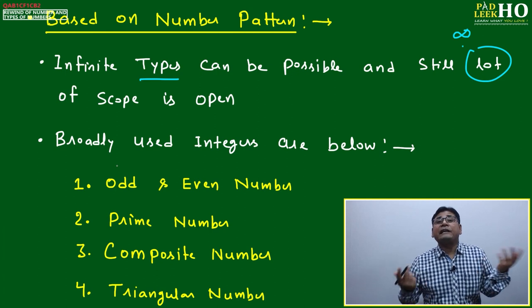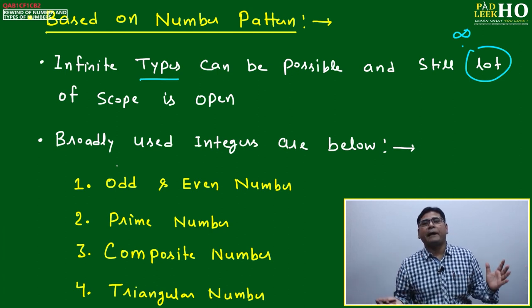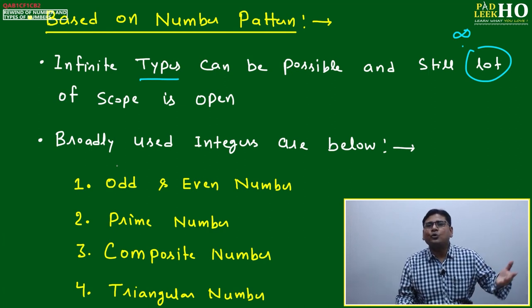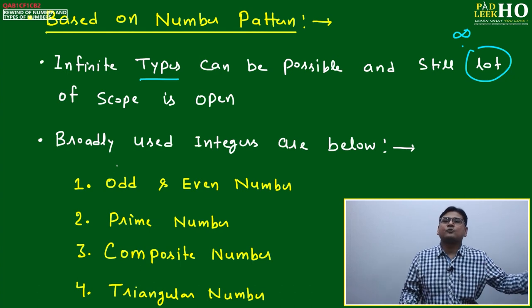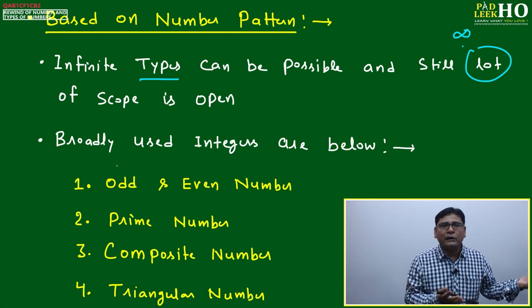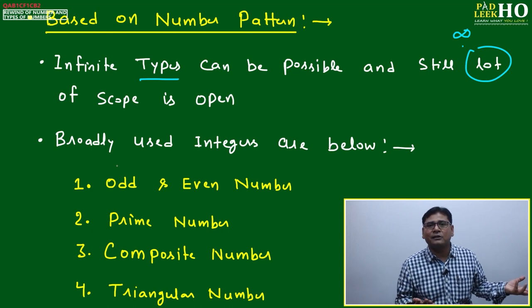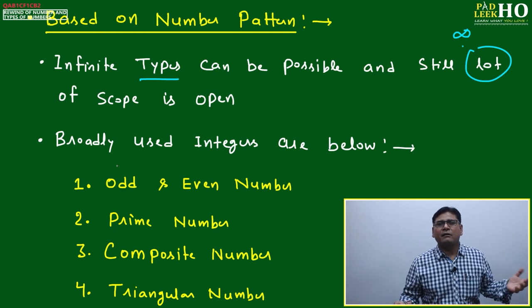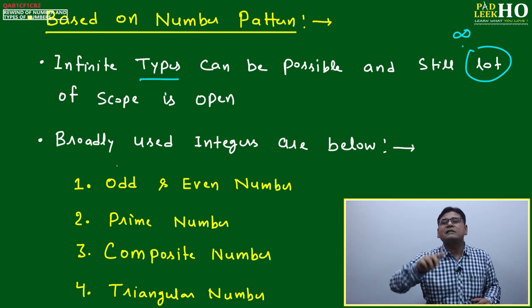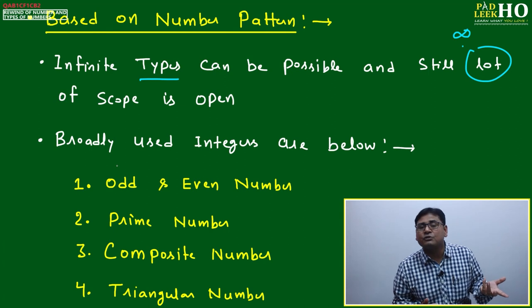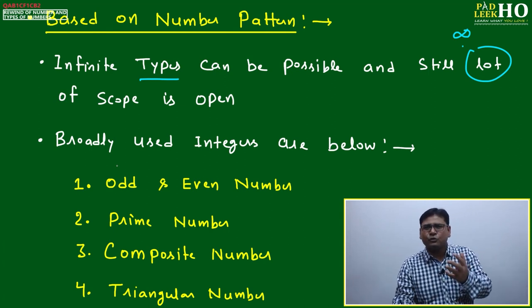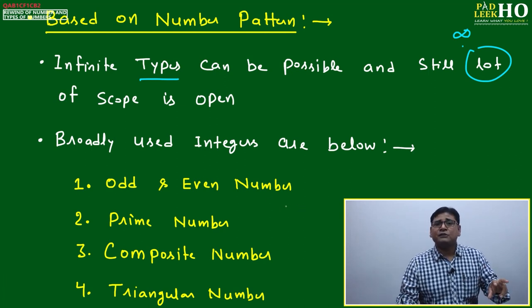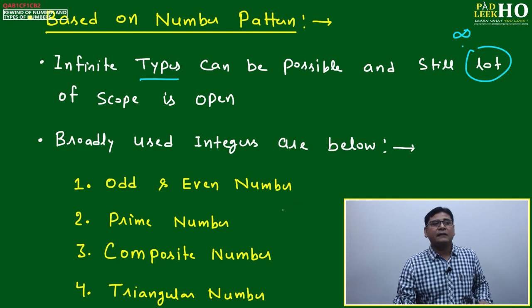Prime numbers are fascinating. Once you start going through prime numbers, you can get totally absorbed. Prime numbers give a very good idea of how the universe can be framed — the universal spiral shape is based on prime number distribution. I won't go that deep here, as it's not required for CAT, but basic properties and frequently asked question types will be covered.